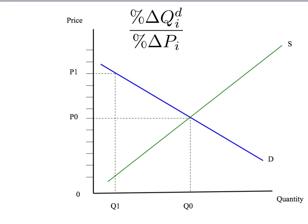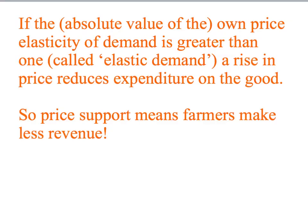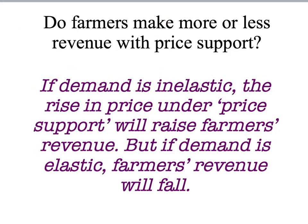The percentage change in quantity is big compared to the percentage change in price, so the absolute value of the own price elasticity of demand is greater than 1, because the top of the fraction is bigger than the bottom. In that situation, a rise in price will lead to a fall in revenue for farmers. If the absolute value of the own price elasticity of demand for wool is greater than 1 — elastic demand — then a rise in price reduces expenditure on the good. So price support means farmers will actually make less revenue.